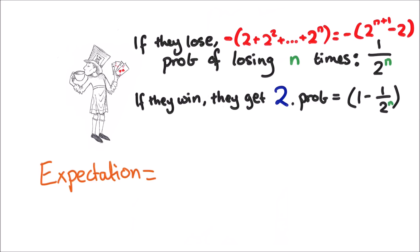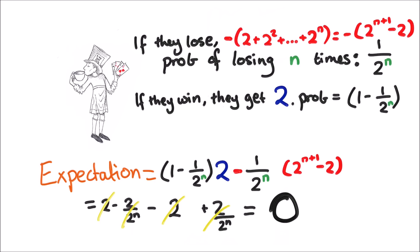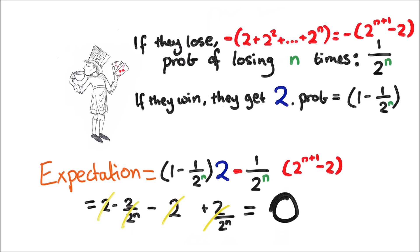So we put all of this together in the expectation value formula: the probability of not folding times the gain plus the probability of folding times the loss, and it magically works out to zero.